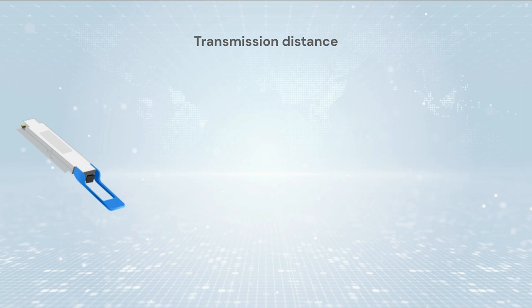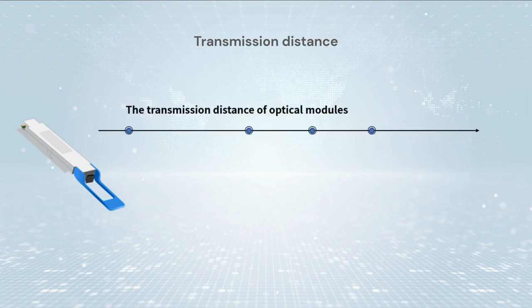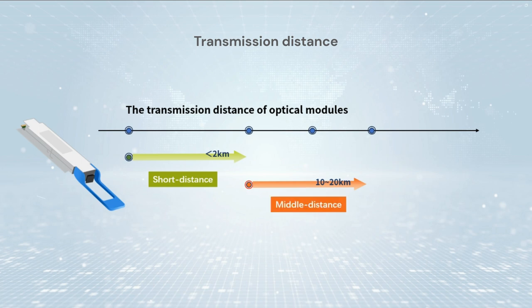The common optical modules are divided into short distance (less than 2 km), middle distance (from 10 km to 20 km), and long distance (more than 30 km).